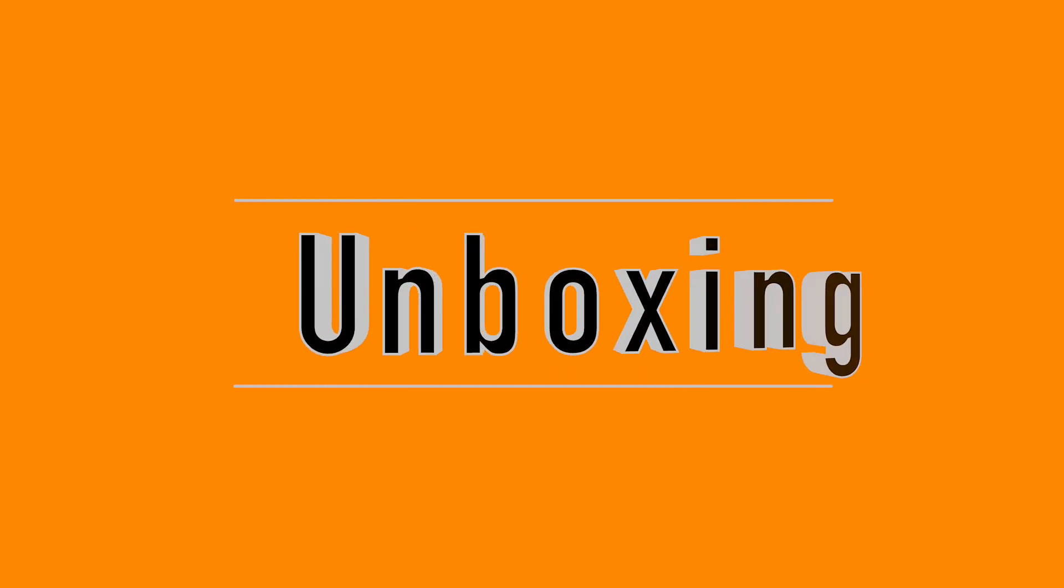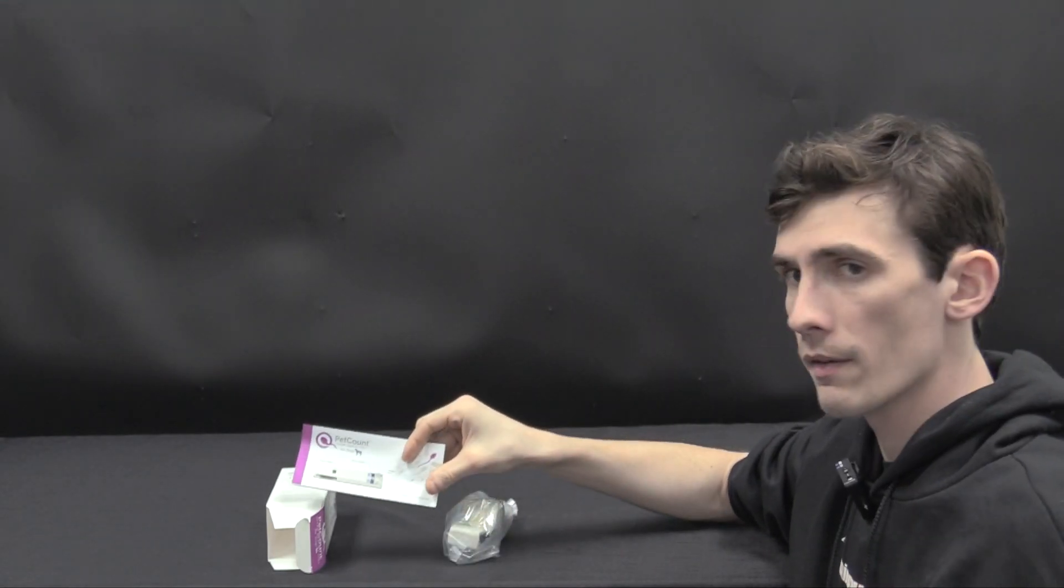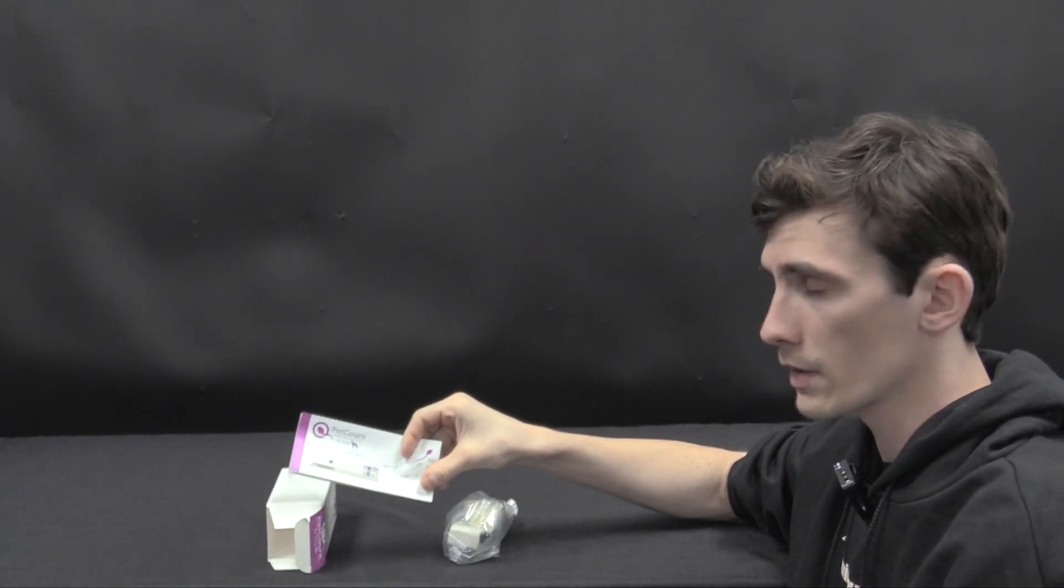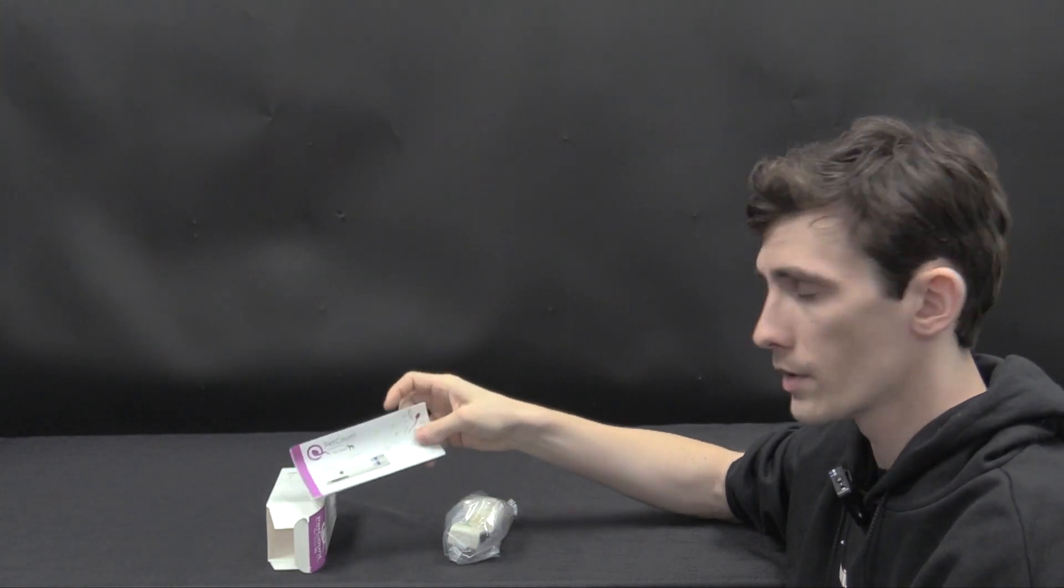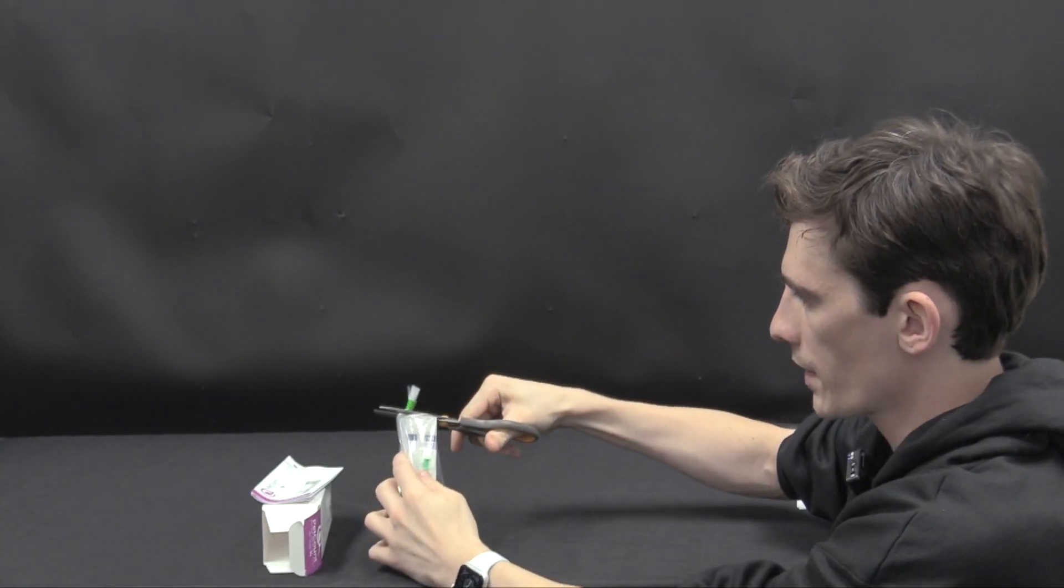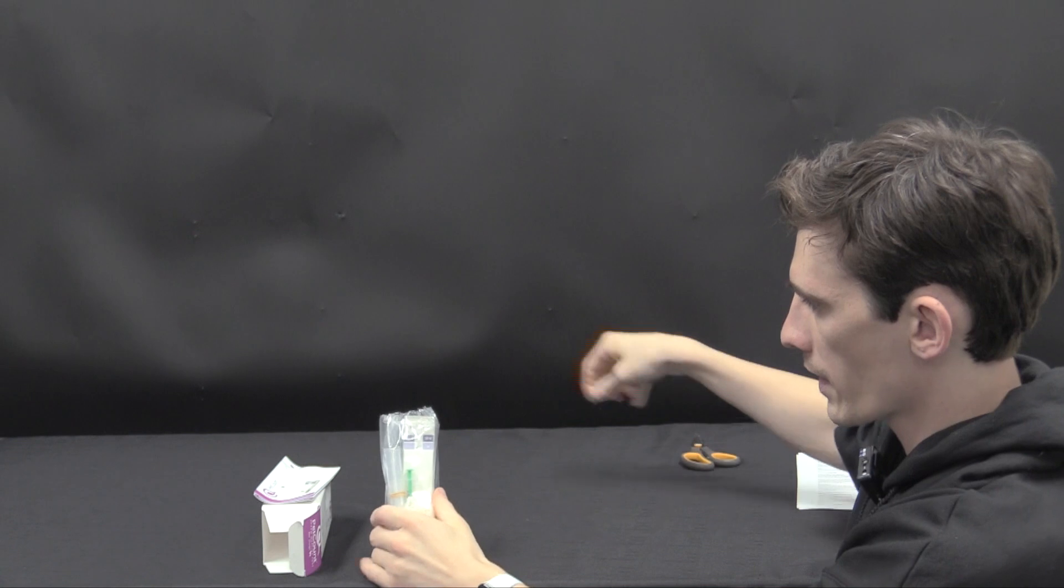Let's open up the package and see all the contents included. Again, this will have everything you need to assess the sperm sample minus your dog. So here we have the instruction sheet. It's pretty simple. It'll give you a step-by-step outline of what to do. Next in the interior packaging we have the rest of the kit contents.